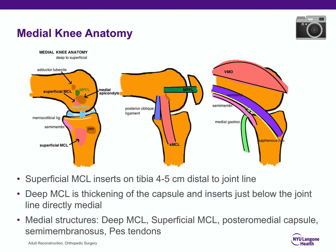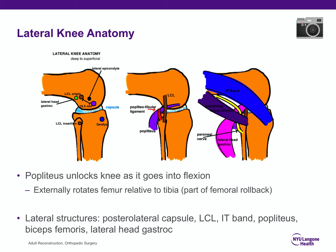Commit lateral structures to memory. The popliteus unlocks the knee going into flexion and externally rotates the femur relative to the tibia — part of femoral rollback. As you go into flexion, the femur externally rotates relative to the tibia; going into extension, the tibia externally rotates relative to the femur. Memorize whichever framing works best for you.